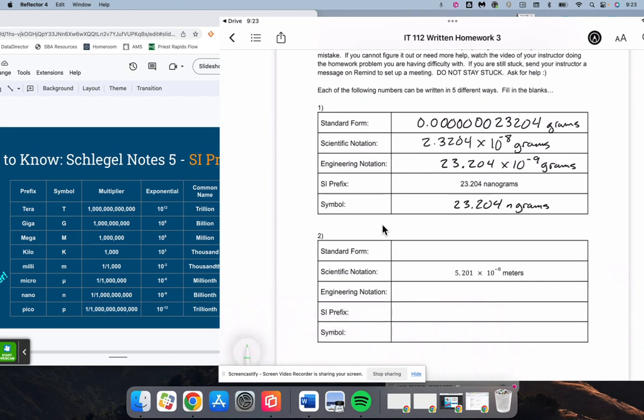And so backing up eight spots, one, two, three, four, five, six, seven, eight gives me one, two, three, four, five, six, seven zeros.